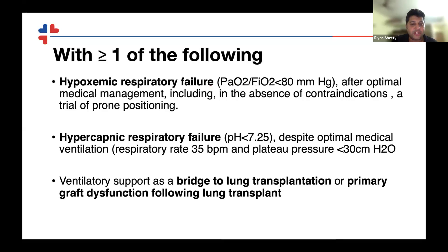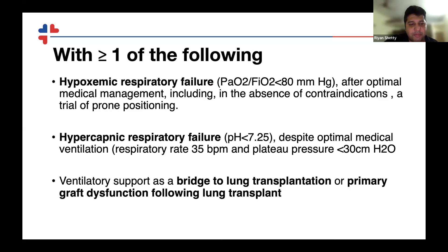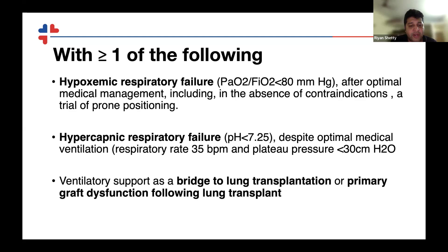Coming to the indications for respiratory failure ECMO: if anybody has more than one of the following — hypoxic respiratory failure with a PaO2/FiO2 ratio less than 80, all medical management has been done, absence of contraindications, and a trial of prone positioning has been tried; or hypercapnic respiratory failure despite ventilation, common examples being ARDS and status asthmaticus; or ventilatory support as a bridge to lung transplant or for primary graft dysfunction following lung transplant — more than one of these is a direct indication.